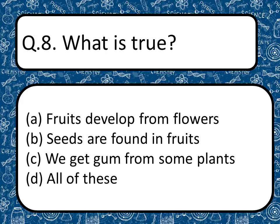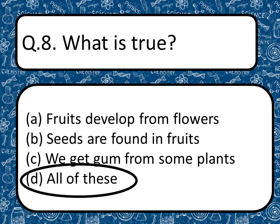What is true? Options are: fruits develop from plants, seeds are found in fruits, we get gum from some plants, or all of these. The correct answer is all of these.